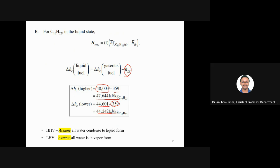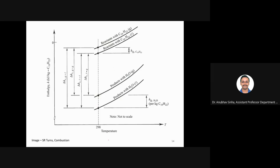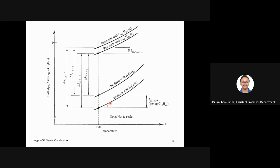So: high heating value assumes all water is in liquid form; low heating value assumes vapor form. Graphically, you can see the enthalpy of various stages — product with liquid water has lower enthalpy; with water as vapor, higher enthalpy, because vapor has higher energy content than liquid. Similarly for the fuel: liquid fuel has lower enthalpy; gaseous fuel has higher enthalpy. Based on that, we take different delta H values, as seen in the previous slides.